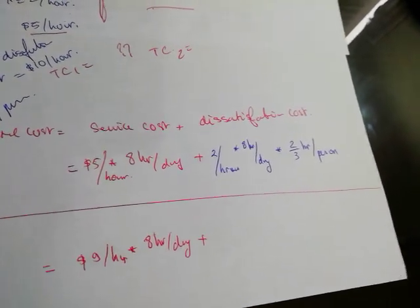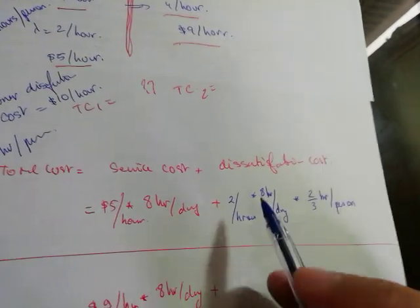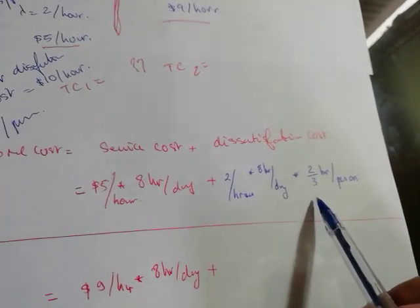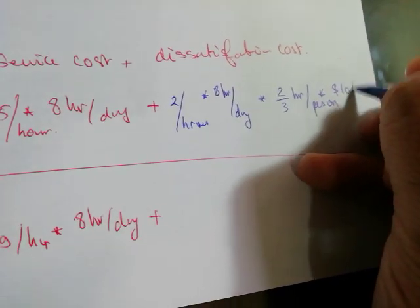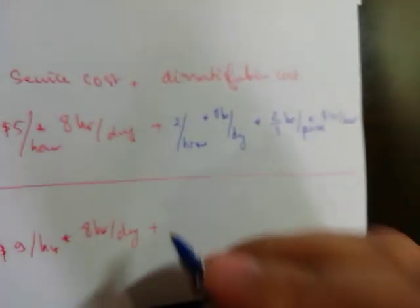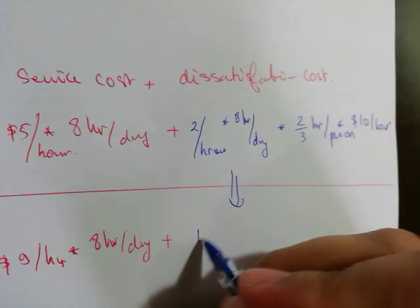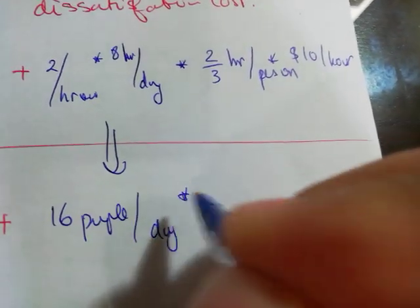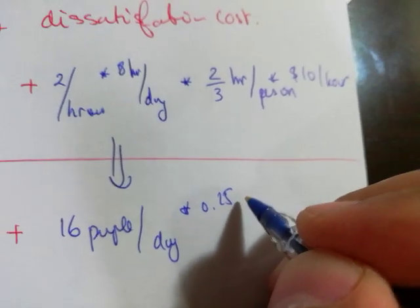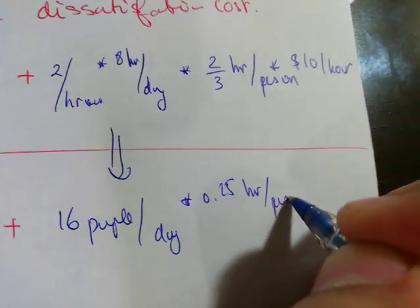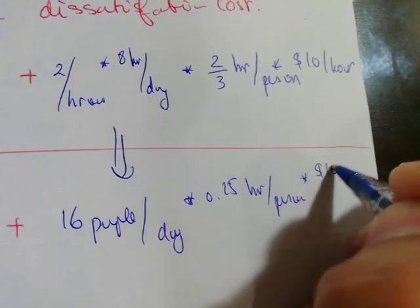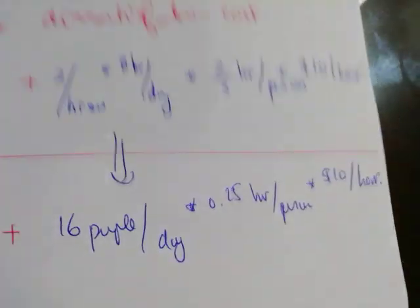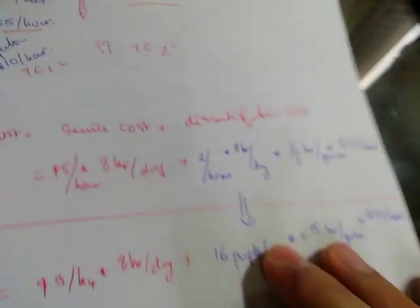If everyone waits for two-thirds hours and we have 16 people, in total they waited 16 times two-thirds, and each waiting hour costs us ten dollars per hour. The same calculation applies to Smith: 16 people per day, everyone waiting 0.25 hours per person, at ten dollars per hour.